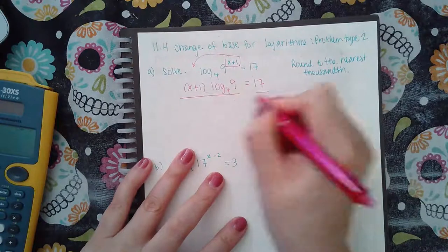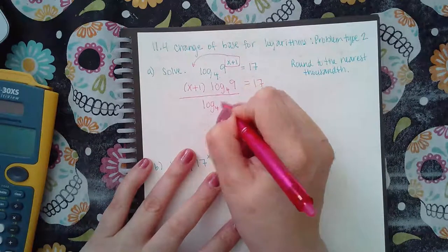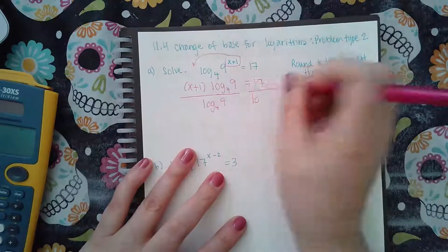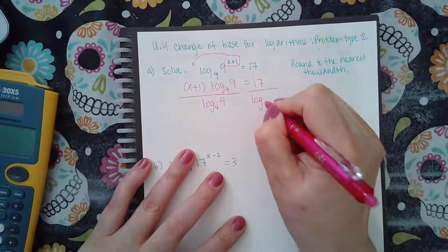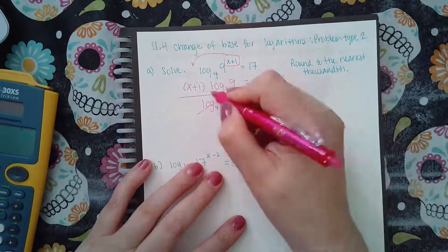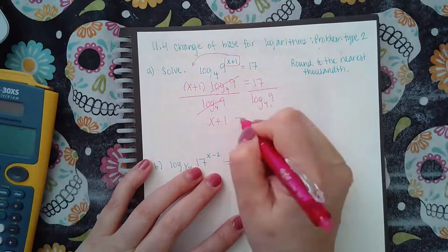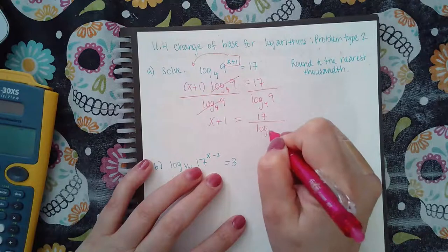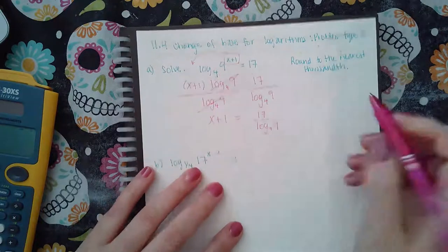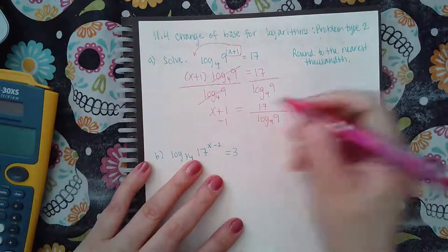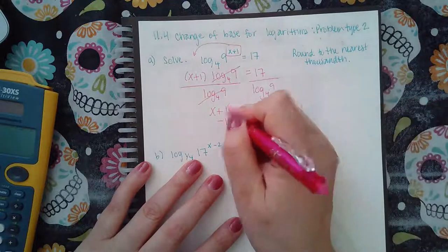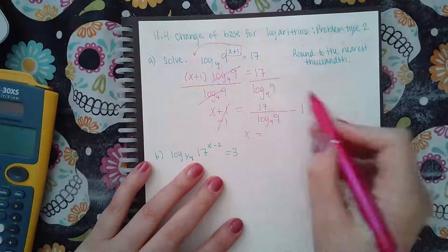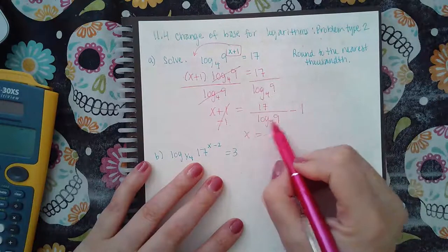So now that I have the X plus 1 over here on the side, I can just take this whole equation and divide it by this log to try to solve for X. So X plus 1 equals 17 over log base 4 of 9. And then if I want to solve for X even further, I would minus 1 on both sides, so I get that X equals this expression here.